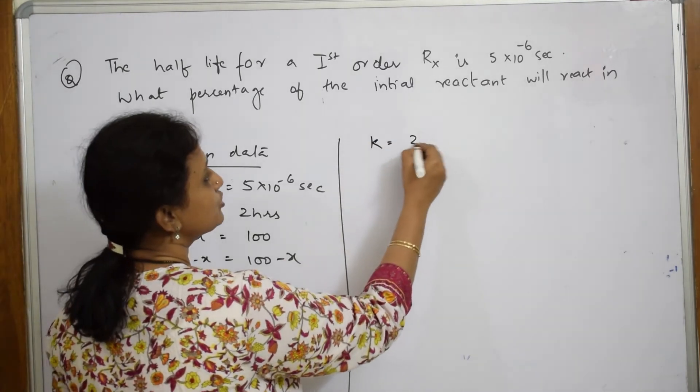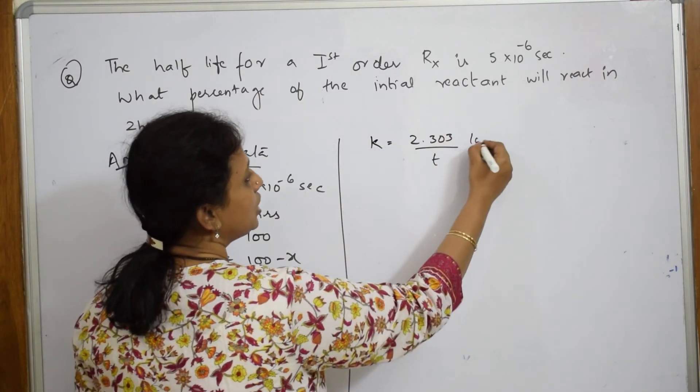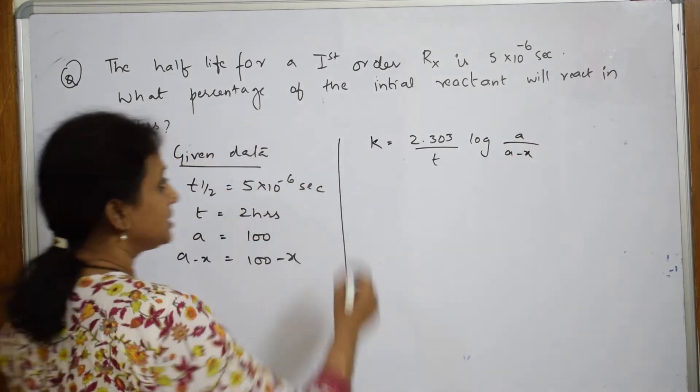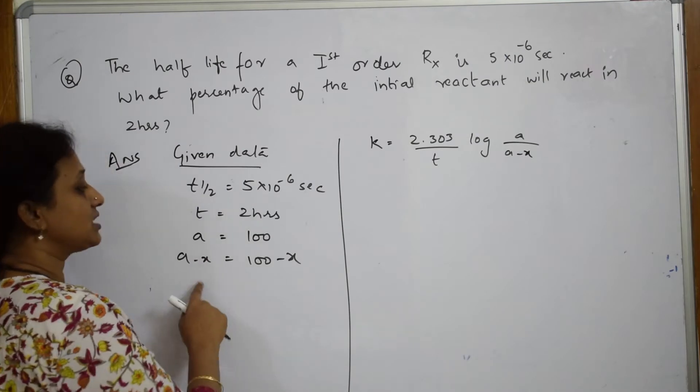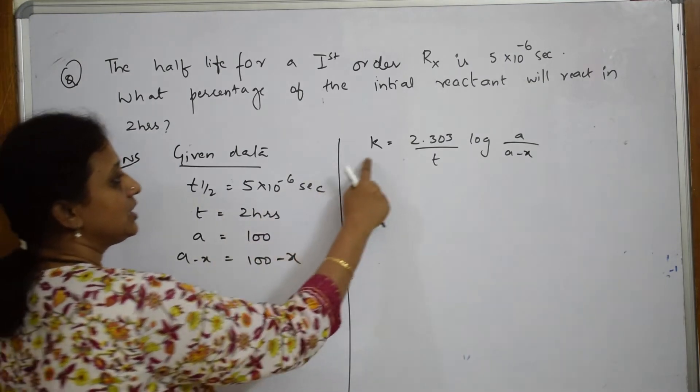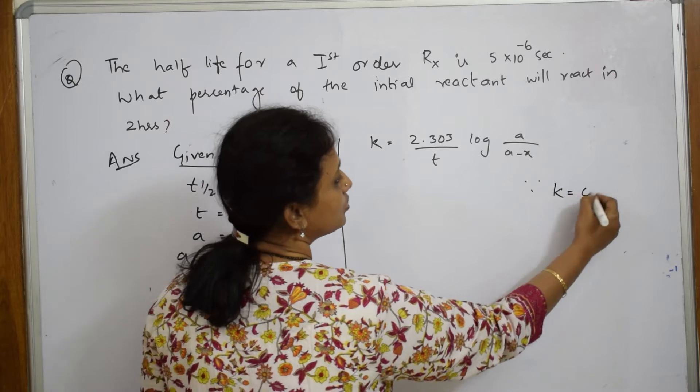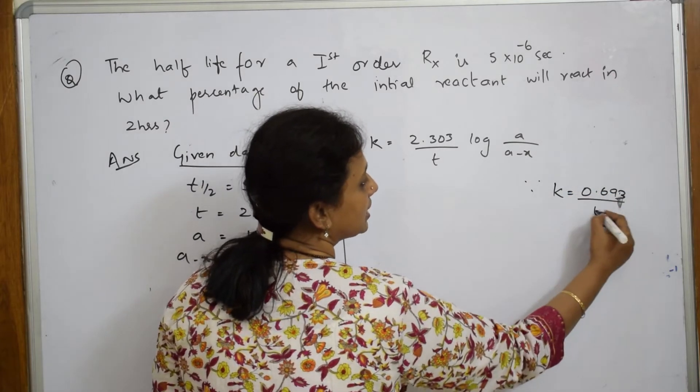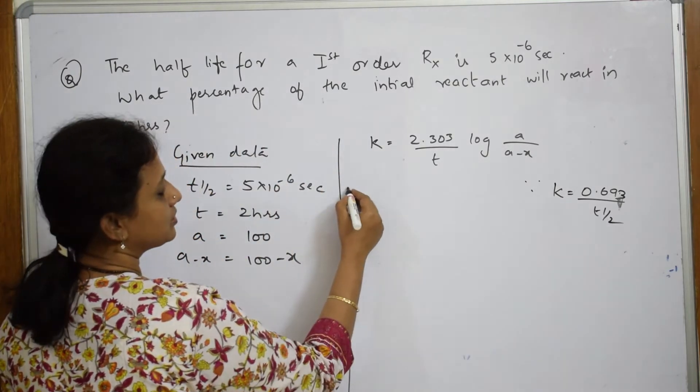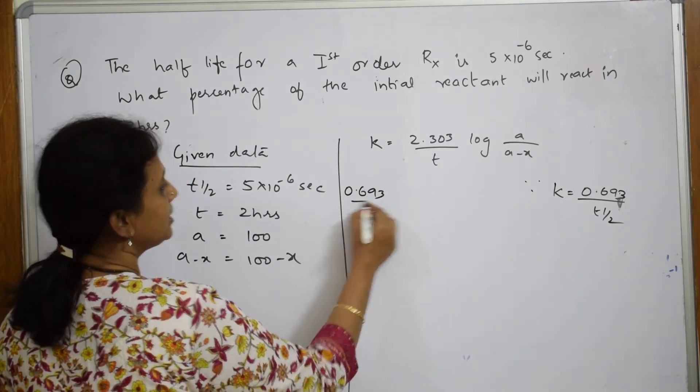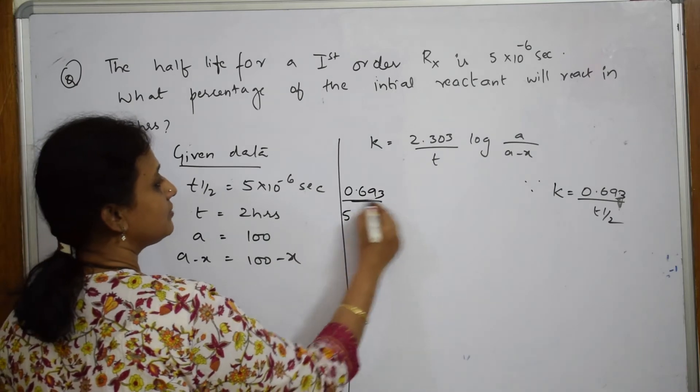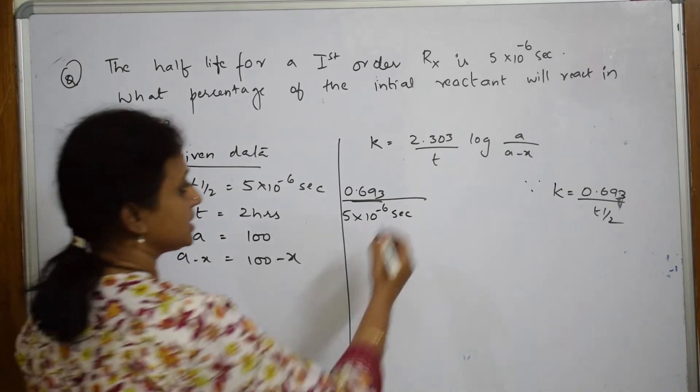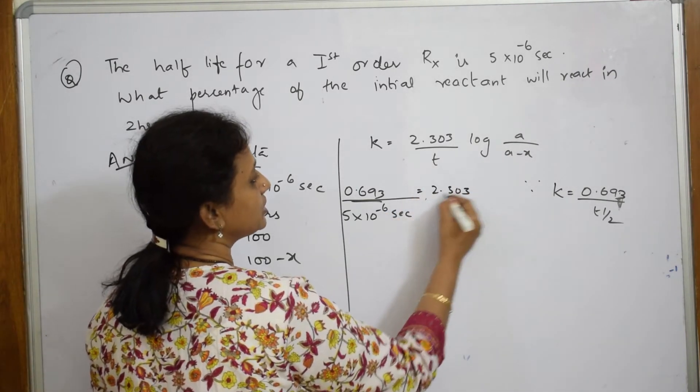Write the formula: k = 2.303/t log(a/(a-x)). Now, is k given to us? No. But what is given? t_half is given. We know k = 0.693/t_half. Now substitute this value: 0.693/t_half = 0.693/(5×10^-6 seconds) = 2.303/t...